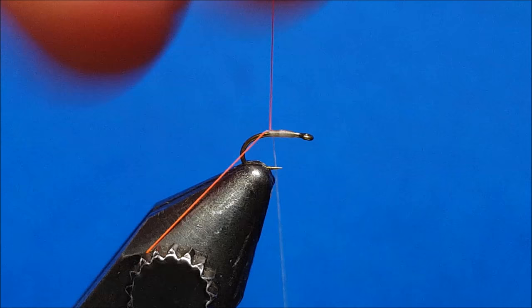Secure it with three or four wraps, letting the bobbin side of the thread hang, and then coming in and snipping off the excess.